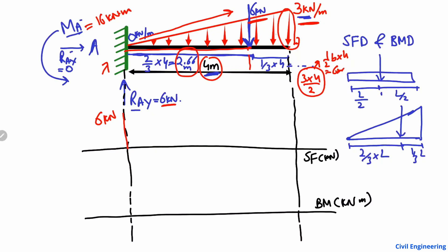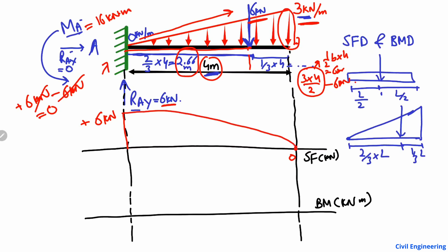This load acts downward, so it contributes minus 6 kilonewton to the shear force. Starting from plus 6 kN at the free end and subtracting the triangular load, we arrive at zero at the fixed support. The plus 6 and minus 6 cancel out, giving zero shear force at point A, which is correct since there is no additional support beyond that.